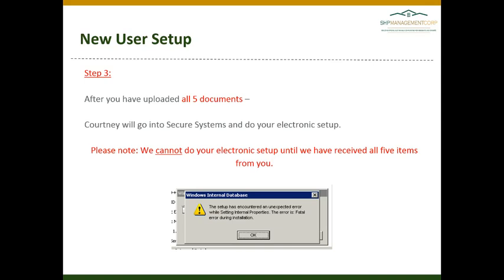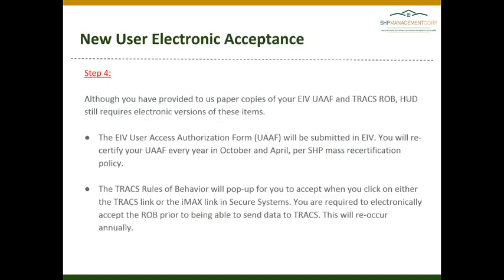Step 3: after you have uploaded all five documents, Courtney will go into Secure Systems and do your electronic setup. Please note we cannot do your electronic setup until we have received all five items from you, and you will not be able to access any of the federal databases until we have finished your electronic setup. Step 4: although you have provided paper copies of your EIV UAAF and TRACS Rules of Behavior, HUD still requires electronic versions of these items. The EIV UAAF will be submitted in EIV and you must do this every October and April. The TRACS Rules of Behavior will pop up for you to accept when you click on either the TRACS link or the IMAX link in Secure Systems.